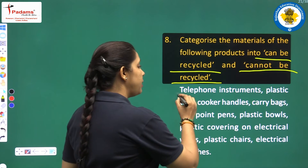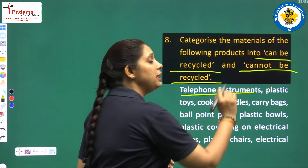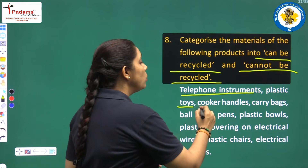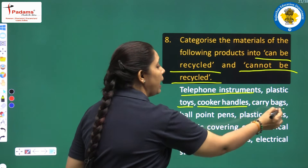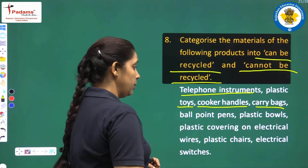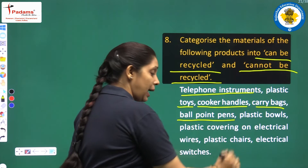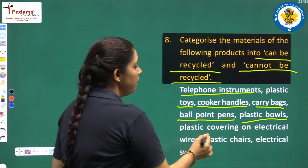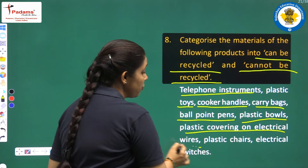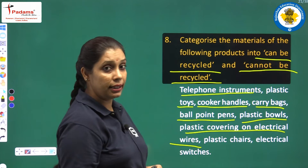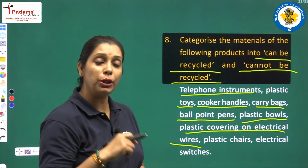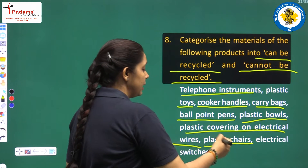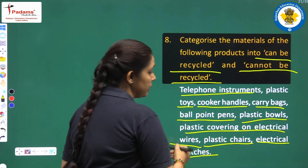Let us read the products: telephone instruments, plastic toys, cooker handles, carry bags, ballpoint pens, plastic balls, plastic covering on electric wires, plastic chairs, electrical switches.